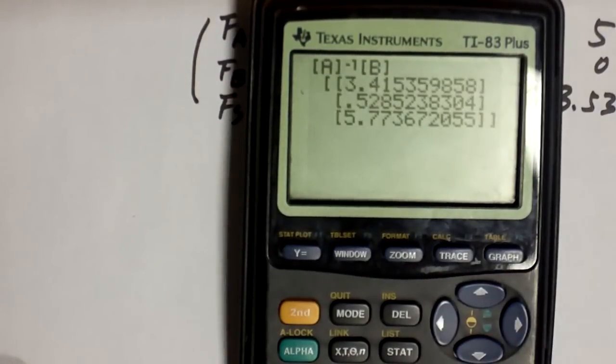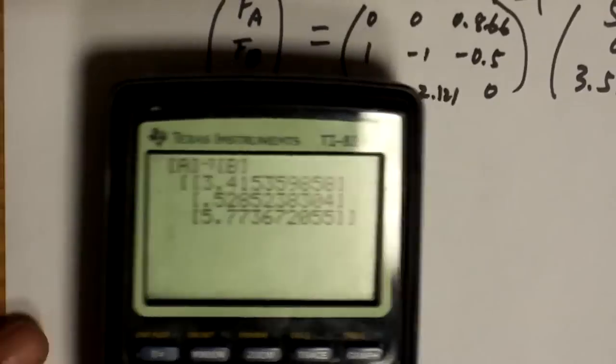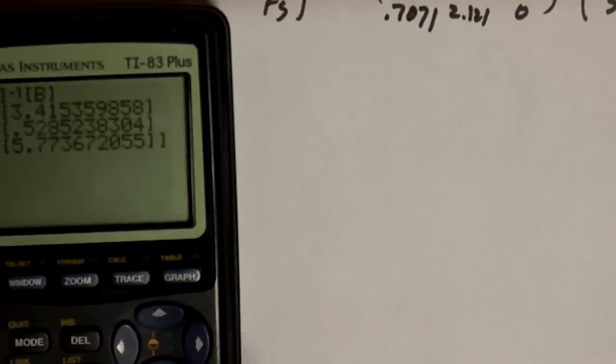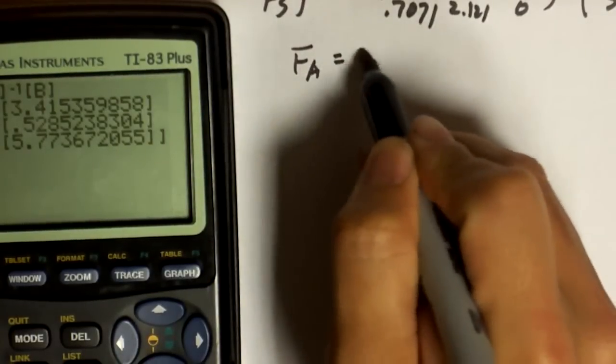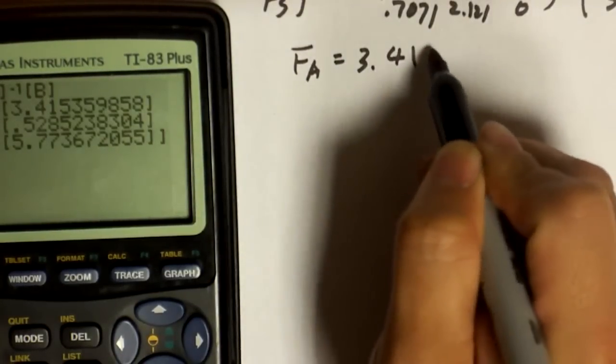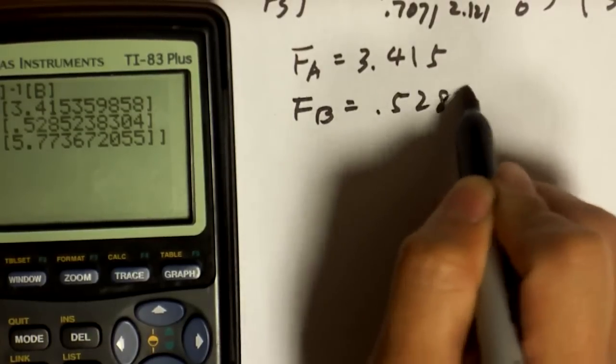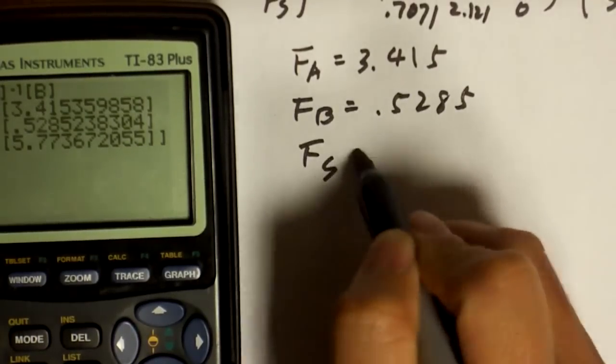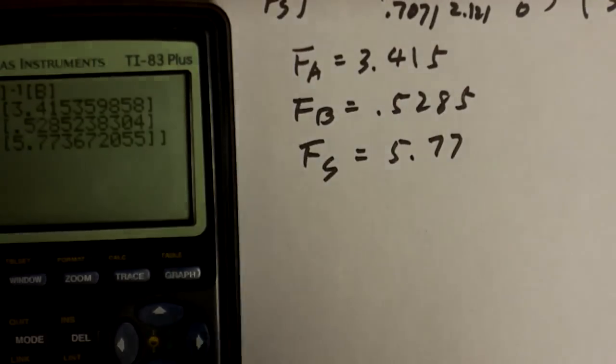So, let's hit enter and you see these three numbers. These are the values of FA, FB, FS. So, let's write down the answer. FA equals 3.415, FB 0.5285, FS equals 5.77. That's all. Stop right? No.